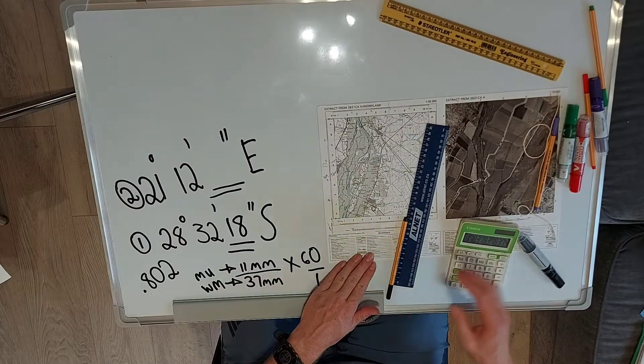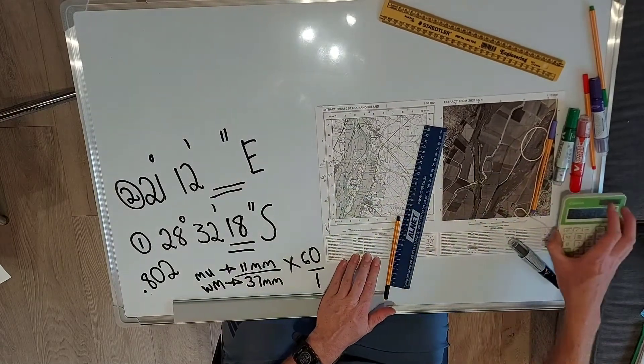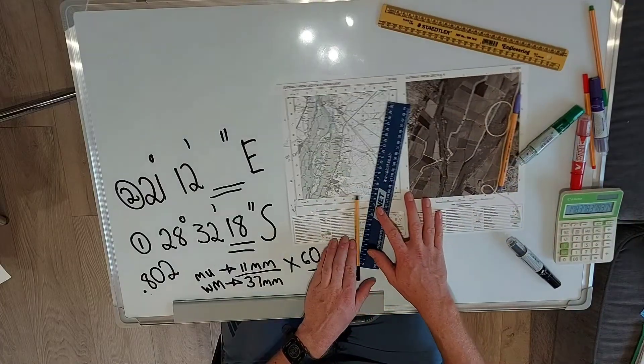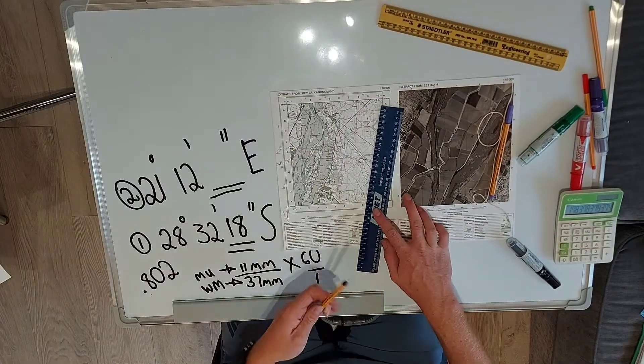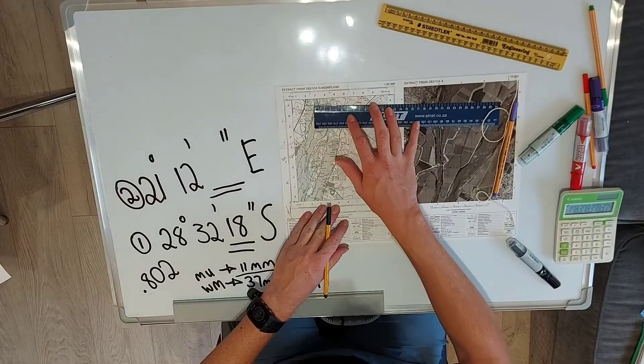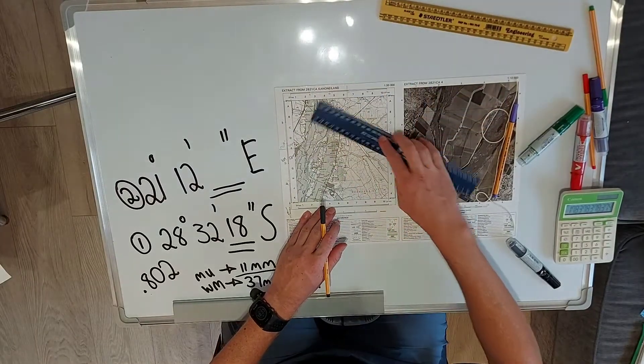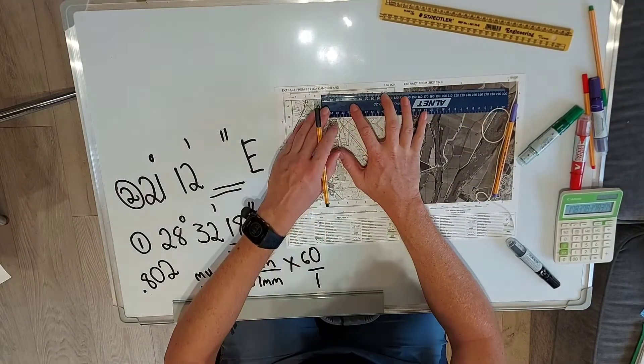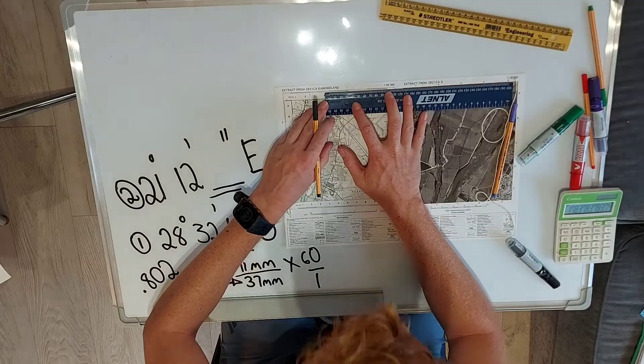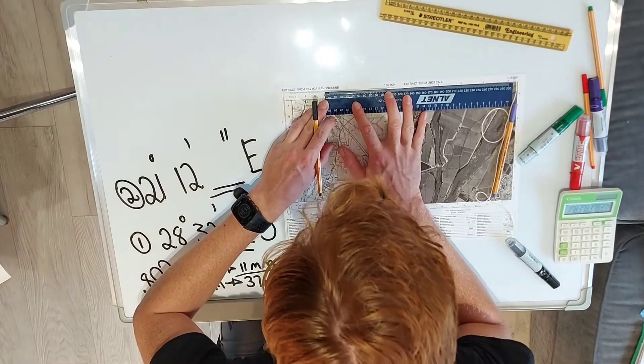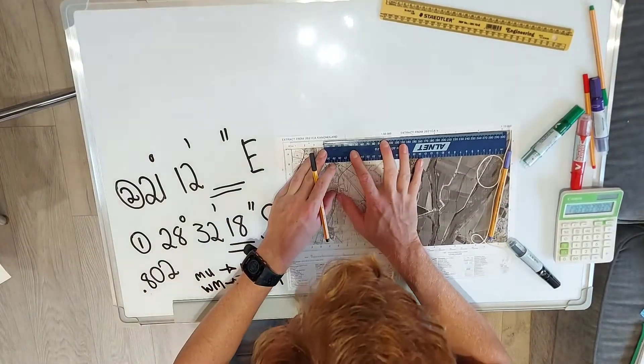Okay, so you guys just write that in, and now we're going to go east and we're going to work out east coordinates. Again, we've got to measure from west to east, and I'm just going to put the map a little bit down.